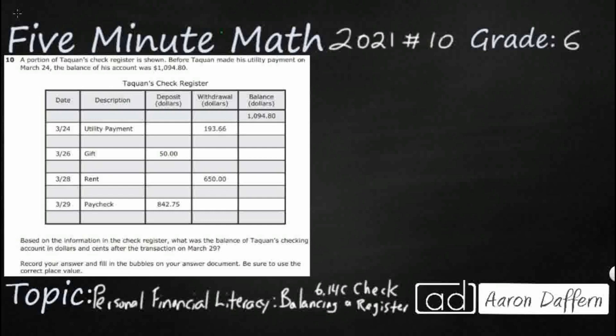Hello, and welcome to 5-Minute Math. Today we are looking at the 6th grade concept of personal financial literacy, balancing a check register. This is standard 6.14c in the great state of Texas, and we are using item number 10 off the 2021 released STAR test.